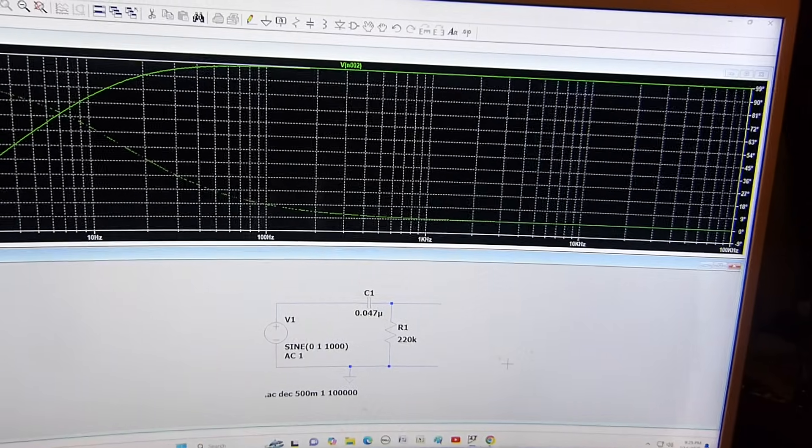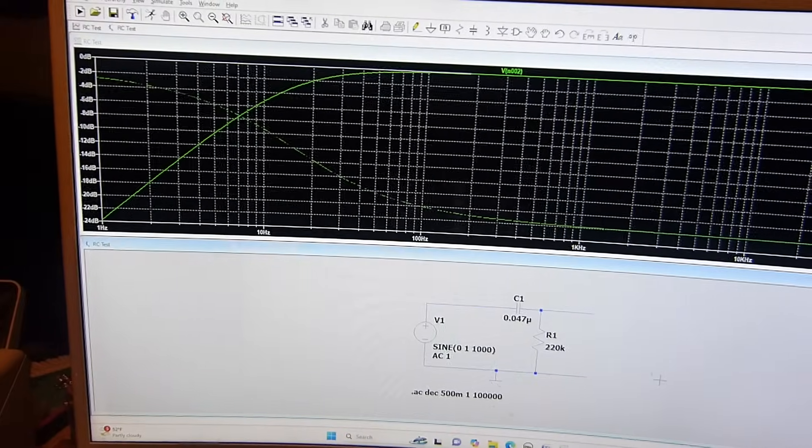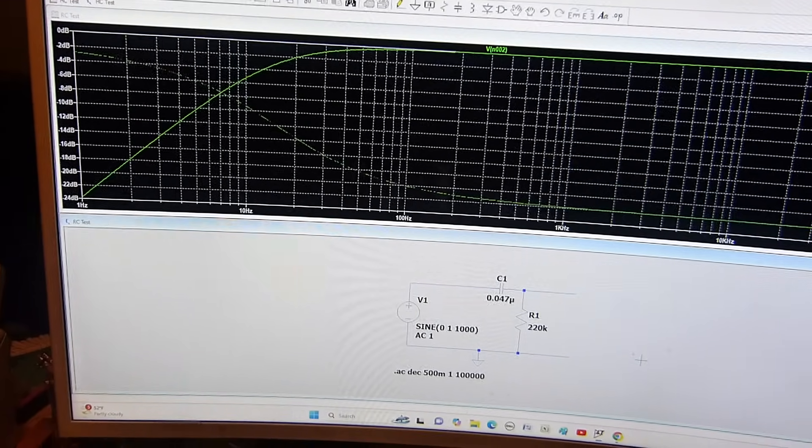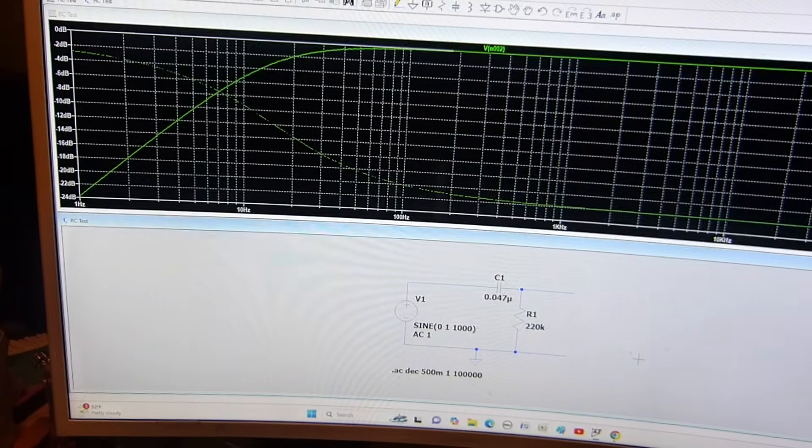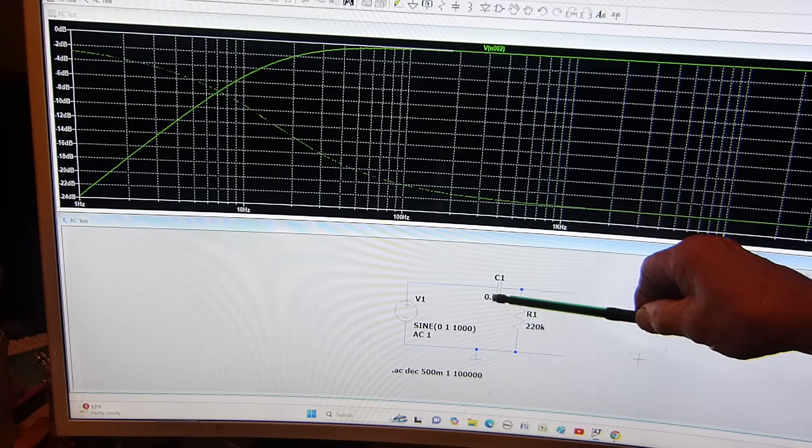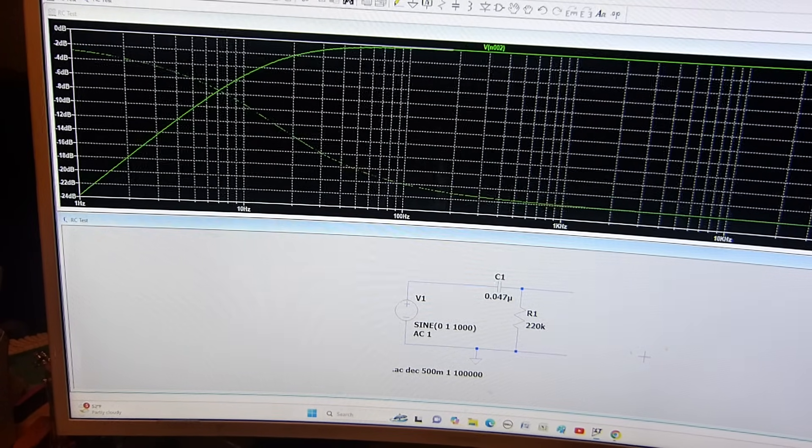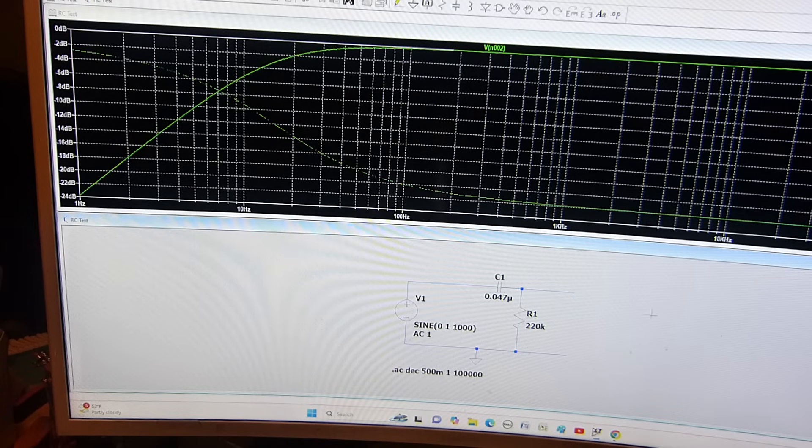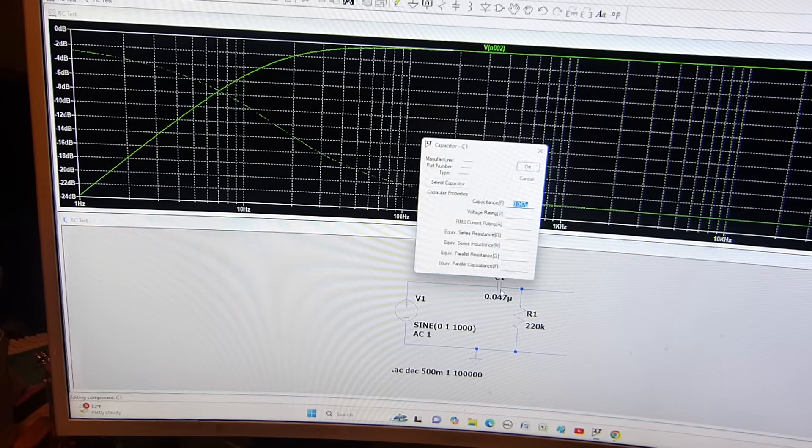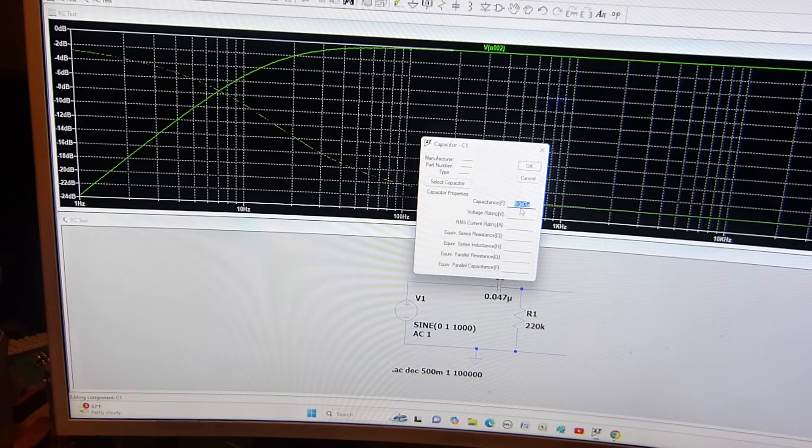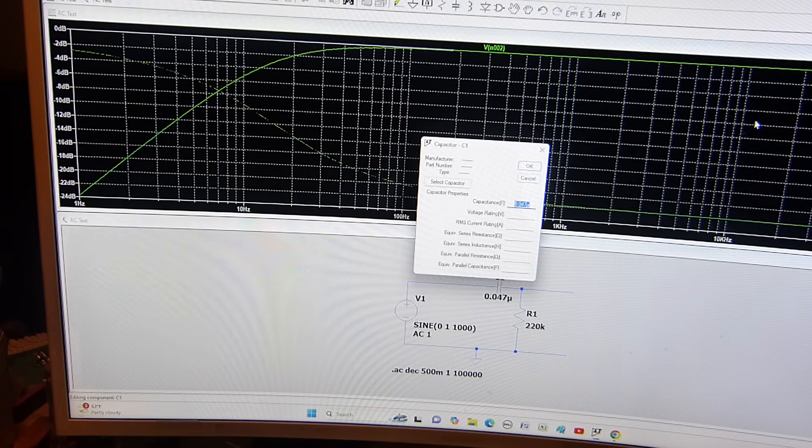But it doesn't do anything to the high frequencies - it's just a high pass filter, so it's going to pass right on through the highs. Now if we start changing the value of this thing, I'm going to change the value of it. I'm going to right click on this capacitor.